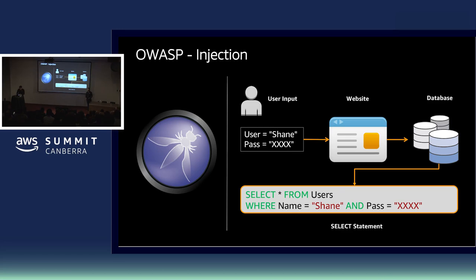The OWASP Top 10 was last updated in 2017, and it's no surprise that number one on the list is injection. Injection occurs when a malicious actor can send hostile data to an interpreter, and almost any type of data can be that hostile data. Injection is mainly found in legacy applications, but it can be found in SQL and NoSQL queries, LDAP, XML parsers, and SMTP. It's relatively simple to detect SQL injection when performing static code analysis, but injection can result in data loss, corruption of data, disclosure to unauthorized parties, and in some cases, complete host takeover.